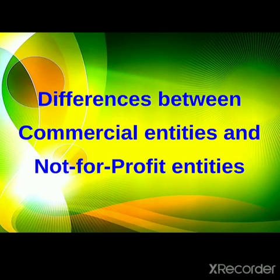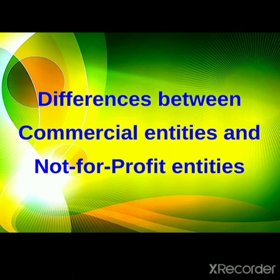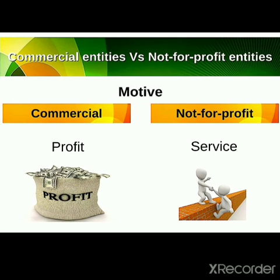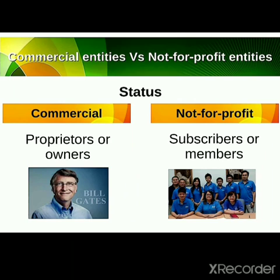Now, the difference between commercial entities and not-for-profit entities. In the book, profit organizations are also called commercial entities. So we have to study the differences between commercial and not-for-profit entities. First: Motive — commercial organizations' main motive is profit earning, but not-for-profit organizations' main motive is service provision. Second: Status — in commercial organizations, proprietors and owners manage the organization, but in not-for-profit organizations, it is the subscribers or members.